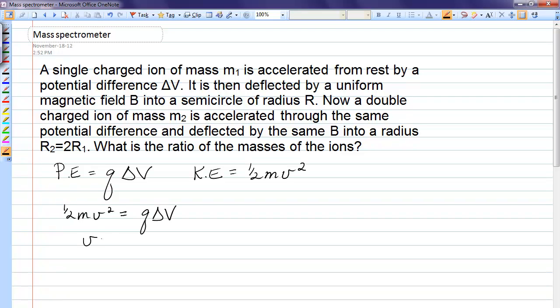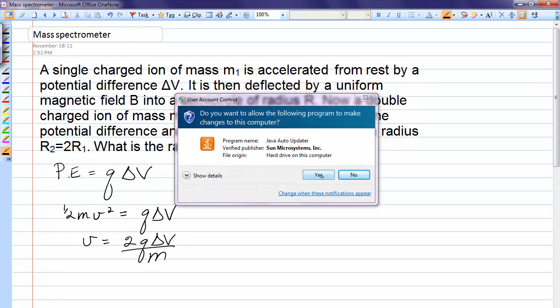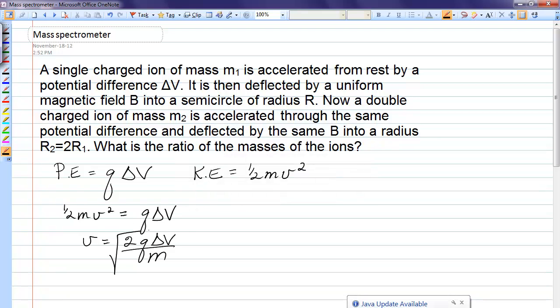So the velocity of the particle after it's gone through this voltage would be square root of 2Q delta V over m. We'll call that equation number one.